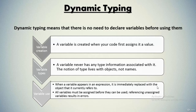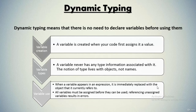A variable never has any type information associated with it. The notion of type lives with objects and not names, which means that the moment you assign an object to a particular variable, the object carries a type instead of the variable. When a variable appears in an expression, it is immediately replaced with the object that is currently referenced. All variables must be assigned before they can be used; referencing an unassigned variable results in an error.